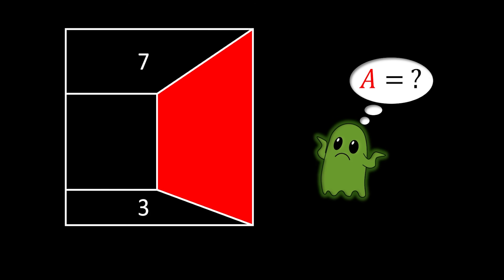In this way we have formed four areas inside the big square. If the upper segment has an area of 7 and the bottom segment has an area of 3, is it somehow possible for us to find the area of the red segment on the right? If you want to try to solve this problem yourself, you can pause the video right now and then come back and check the solution.